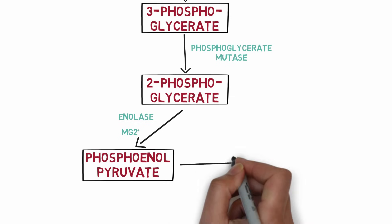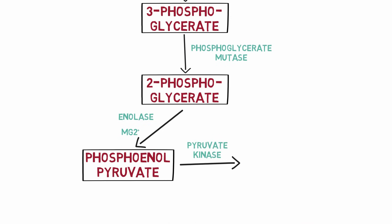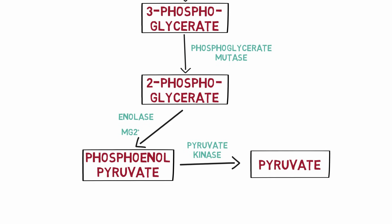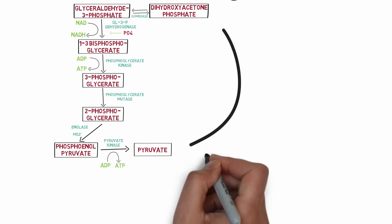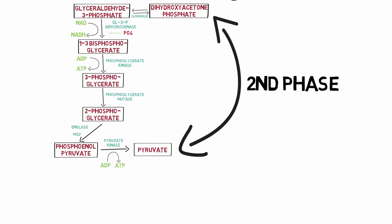In the final step of glycolysis, phosphoenolpyruvate is converted to pyruvate by the enzyme pyruvate kinase. The phosphate group from phosphoenolpyruvate is transferred to ADP and converted to ATP. This completes the second phase of glycolysis, in which energy is produced.